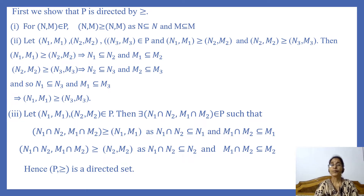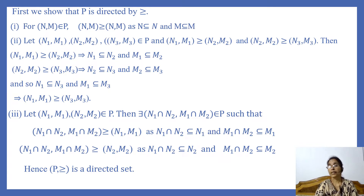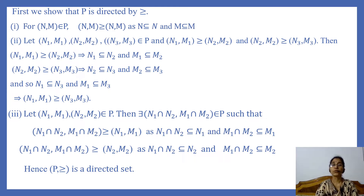For the second condition, let (N1, M1), (N2, M2), (N3, M3) belong to P, and suppose (N1, M1) ≥ (N2, M2) and (N2, M2) ≥ (N3, M3). Then N1 ⊆ N2 and M1 ⊆ M2, and N2 ⊆ N3 and M2 ⊆ M3. These inclusion relations imply N1 ⊆ N3 and M1 ⊆ M3, so by definition (N1, M1) ≥ (N3, M3). We have shown that this relation is transitive.